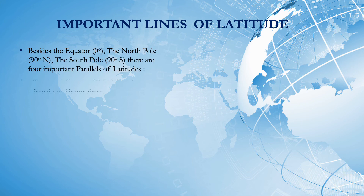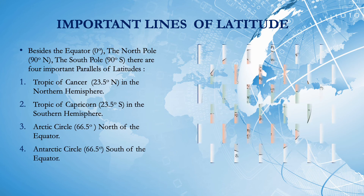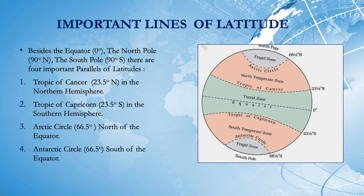Now let's talk about important lines of latitude. Besides the equator, the north pole, and the south pole, there are four important parallels of latitude: the Tropic of Cancer at 23.5 degrees north in the northern hemisphere; the Tropic of Capricorn at 23.5 degrees south in the southern hemisphere; the Arctic Circle at 66.5 degrees north of the equator; and the Antarctic Circle at 66.5 degrees south of the equator.